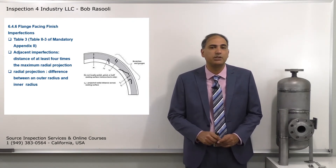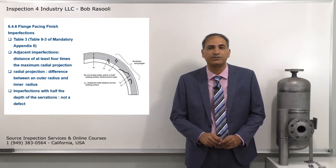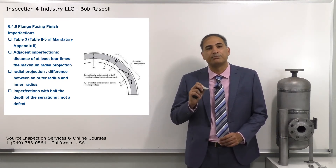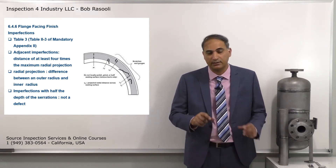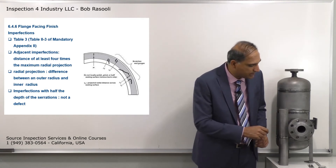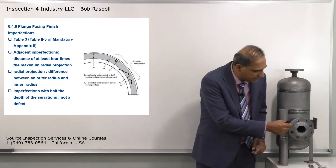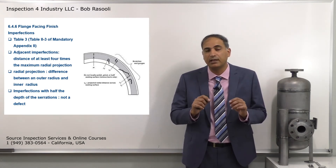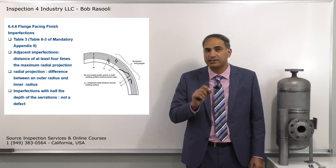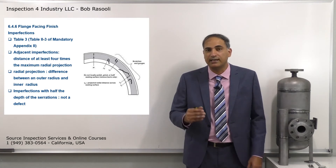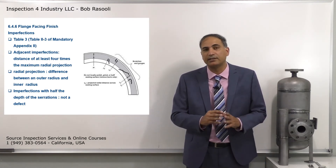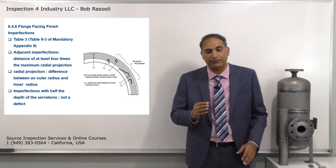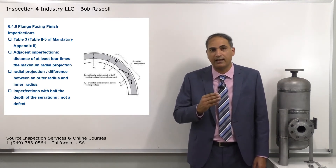The next key item is that an imperfection with a depth less than half the depth of the serration is not considered a defect, as addressed in 6.4.6. If you evaluate a scratch or cut and determine its depth is less than half the serration depth, you can ignore it - it's an imperfection, not a defect. You can only consider rejection when the depth exceeds half the serration depth.